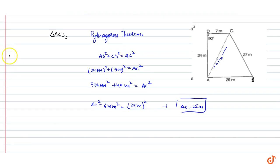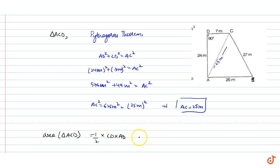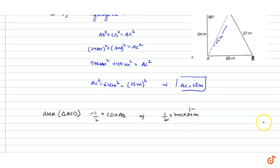Now we find the area of triangle ACD. This will be half into base into height, that is half into 7m into 24m. So it will be 12 times 7, which gives area 1 as 84m squared.